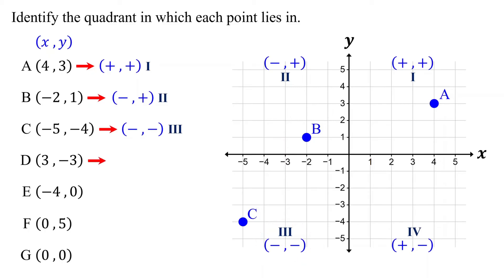Which quadrant is point D located in? Give it a try. Its x-coordinate is positive and its y-coordinate is negative. If the x-coordinate is positive and the y-coordinate is negative, the point lies in quadrant four. Therefore, point D lies in quadrant four. If you plot it, you can also confirm that it is in quadrant four.